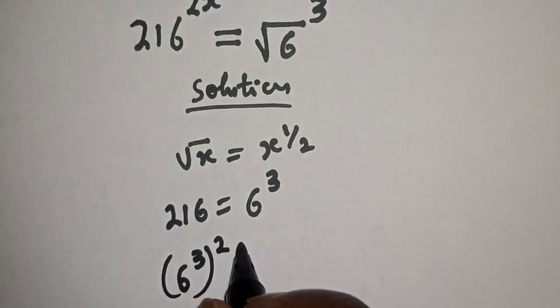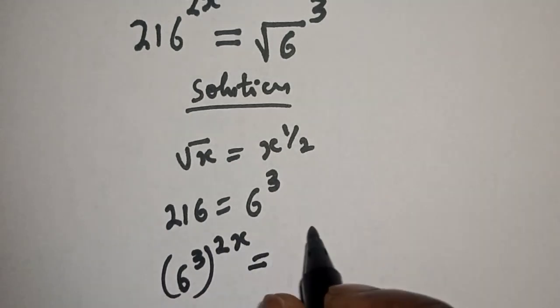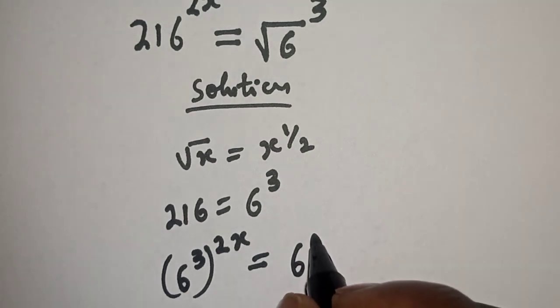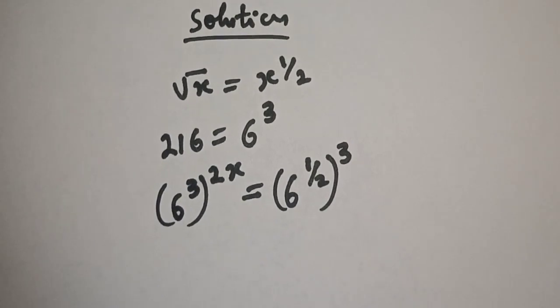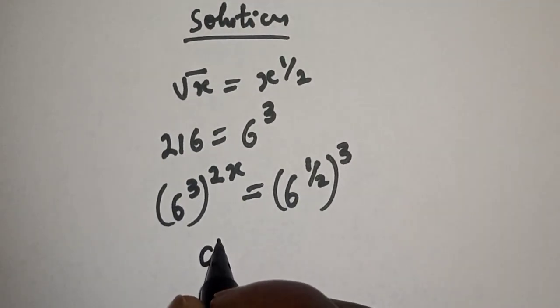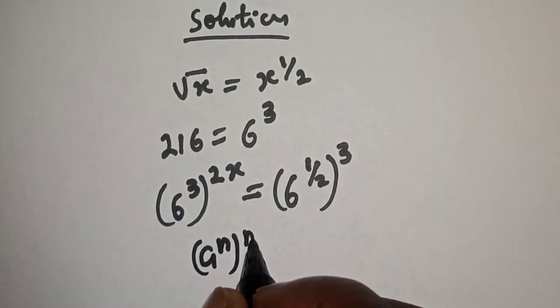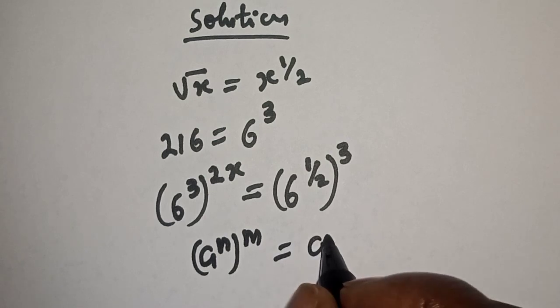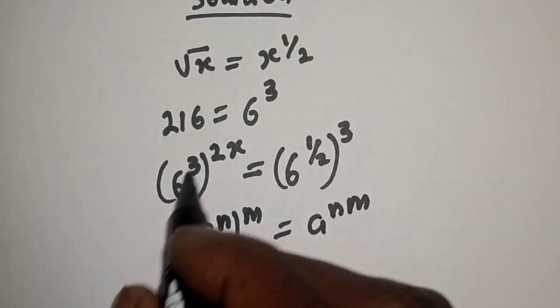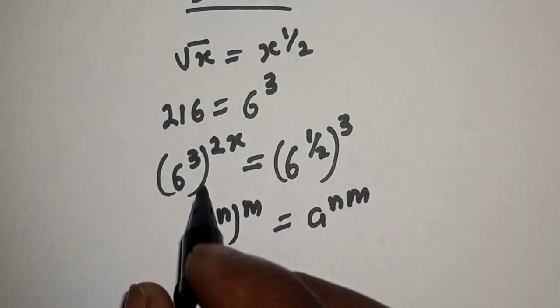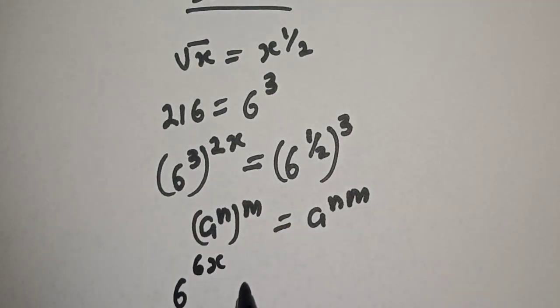To the power of 2x is equal to 6 raised to power 1 over 2 to the power of 3. Take note of this, that if you have a raised to power n raised to power m, is equal to a raised to power nm. So this is 6 raised to power 3 times 2x, which is 6x.